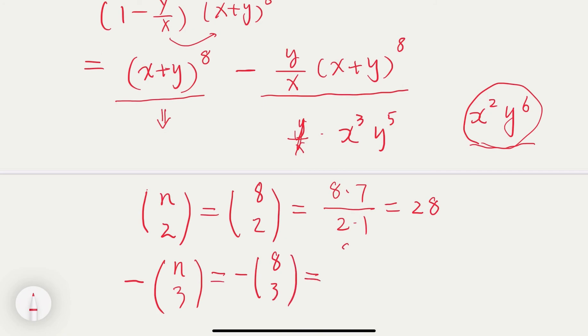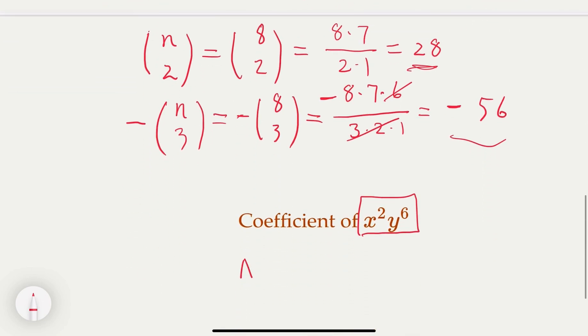So of course, that would be equal to 8 times 7 times 6, divided by 3 times 2 times 1, with a negative sign in front of it. So that is negative 56. This 6th cancels. And then the final answer would be the summation of the two terms, which is 28 minus 56, so the answer is, the coefficient here is negative 28. I hope you follow the process and enjoy the video. Thank you.